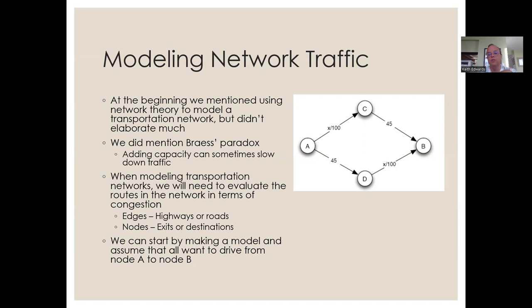It's always going to take 45 minutes on those edges. On the other hand, A-to-C and D-to-B are sensitive to the number of vehicles on the road. For each of those, it takes x divided by 100 minutes, where x is the number of cars on the road. So if there were 1000 cars, it would take 10 minutes from A to C and 10 minutes from D to B.